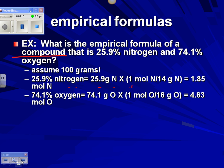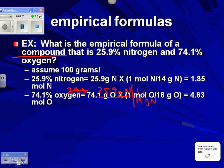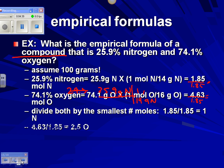After converting both elements to moles, the next step — where people tend to get stuck — is finding the mole ratio. We divide both values by the smallest number of moles, 1.85. So 1.85 divided by itself is 1, and 4.63 divided by 1.85 is 2.5.